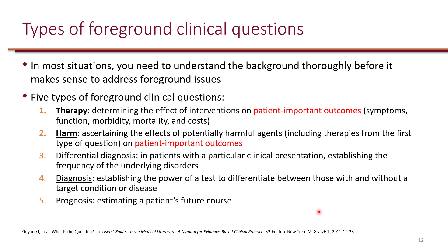There are five types of foreground questions. Pharmacists can be involved with any of these, but we will focus on therapy and harm in this class. When you ask questions about therapy, you specifically ask what medication therapy should you use to achieve clinical outcomes — outcomes that are important to the patient. The most important outcome is always mortality, but it can also include symptom resolution and cost. You can also ask questions about harm, including adverse effects, to figure out a therapy that is well tolerated by the patient.